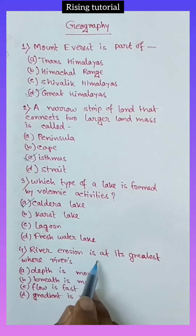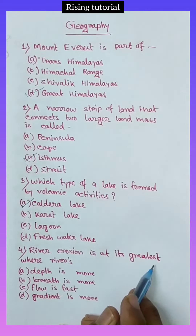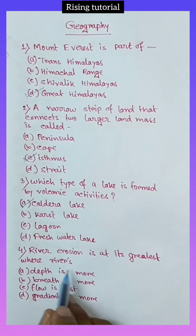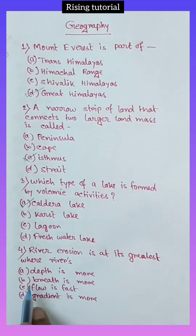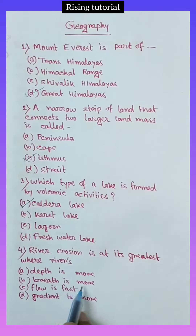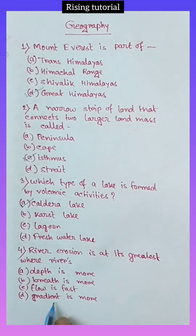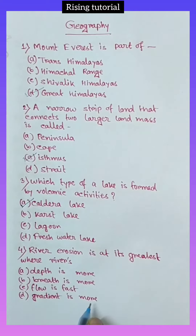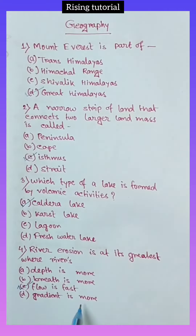Number 4. Lateral erosion is at its greatest in rivers where: option A, depth is more; option B, breadth is more; option C, flow is fast; option D, gradient is more. Answer key: option C, flow is fast.